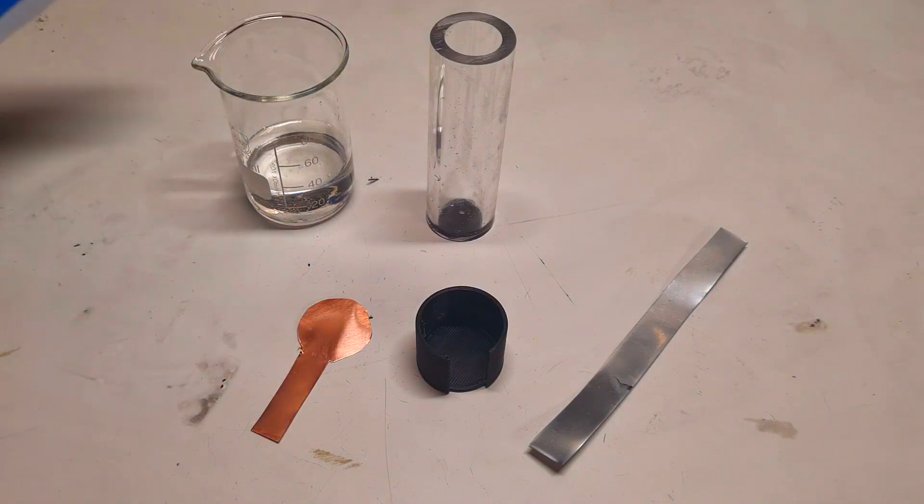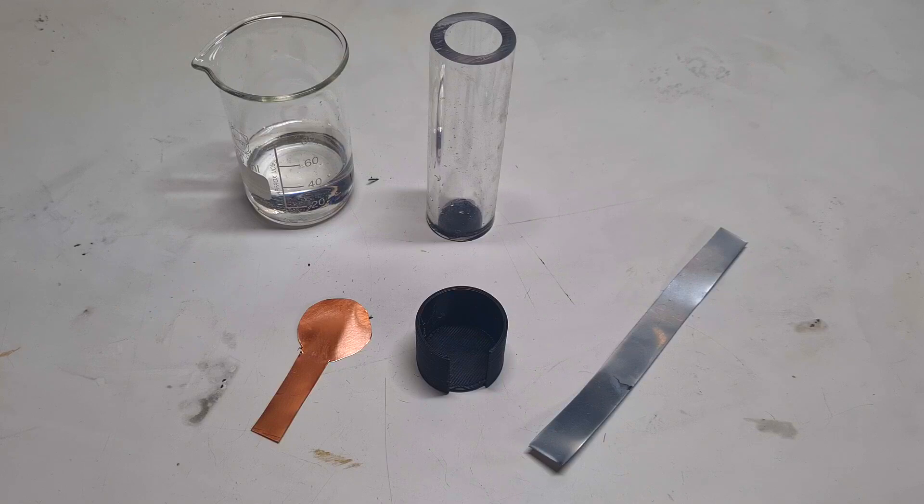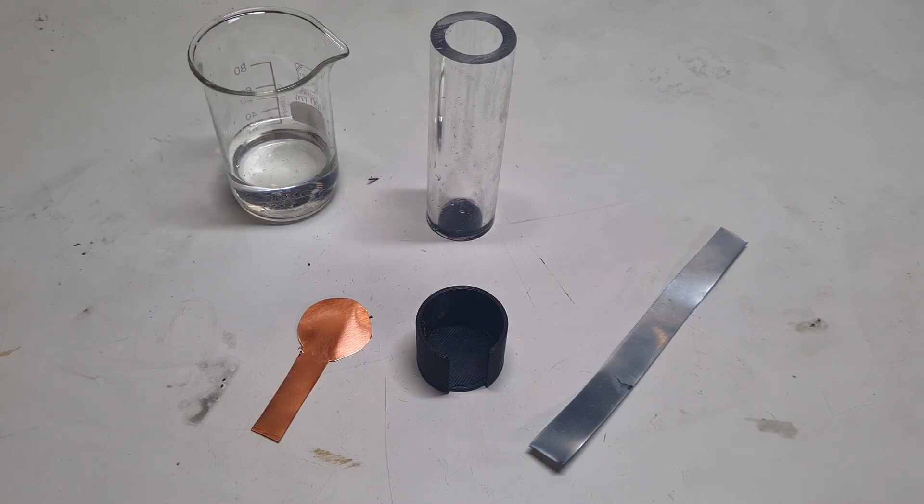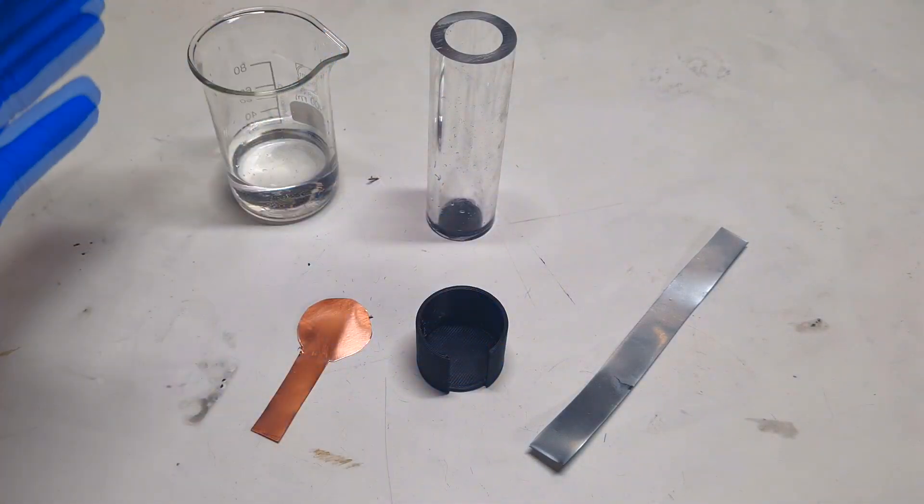Here I also have the electrolyte which is made from two mole of zinc bromine and one mole of zinc sulfate. The amount was 20 milliliters of two mole of zinc bromine and 10 milliliters of one mole zinc sulfate. Now I will put together this cell.